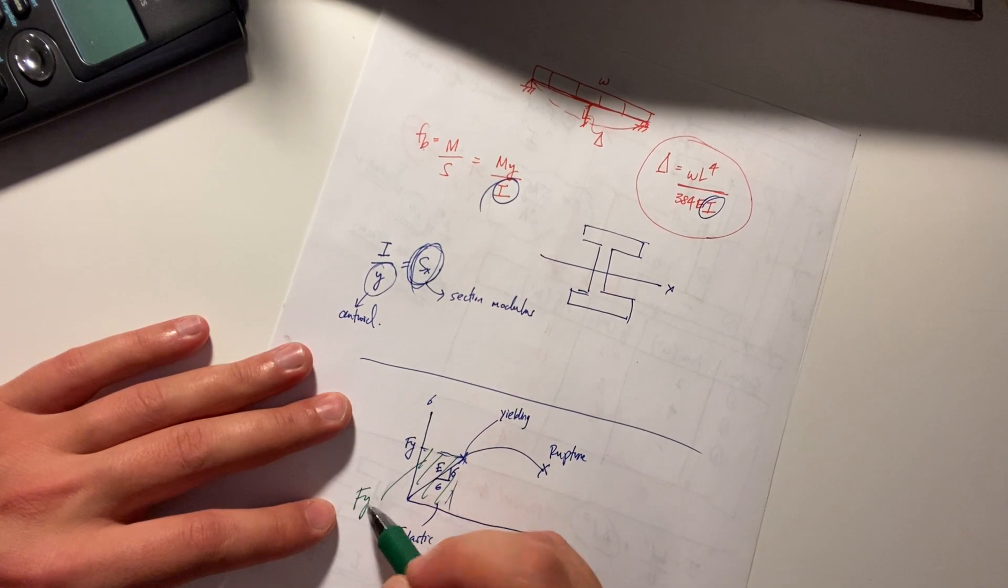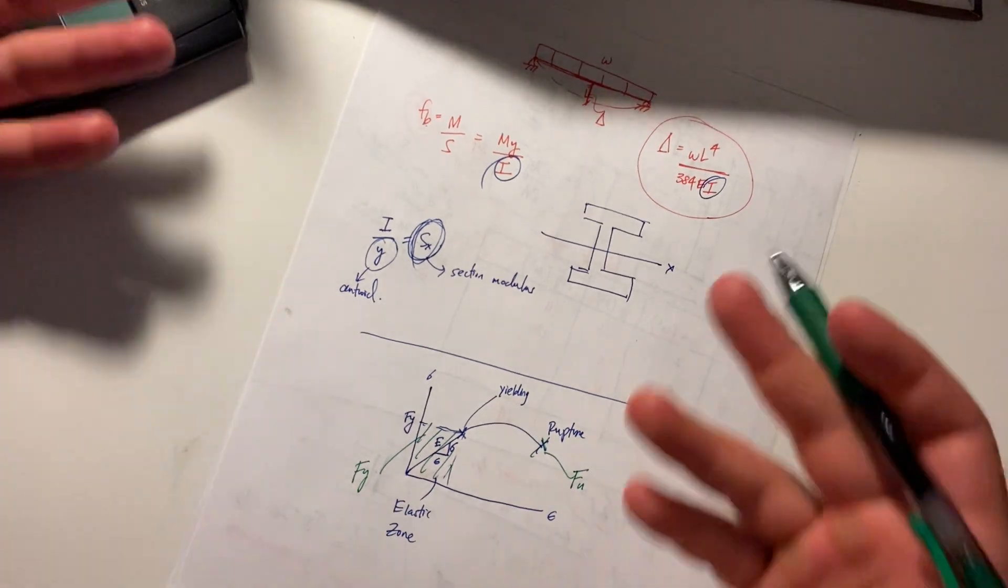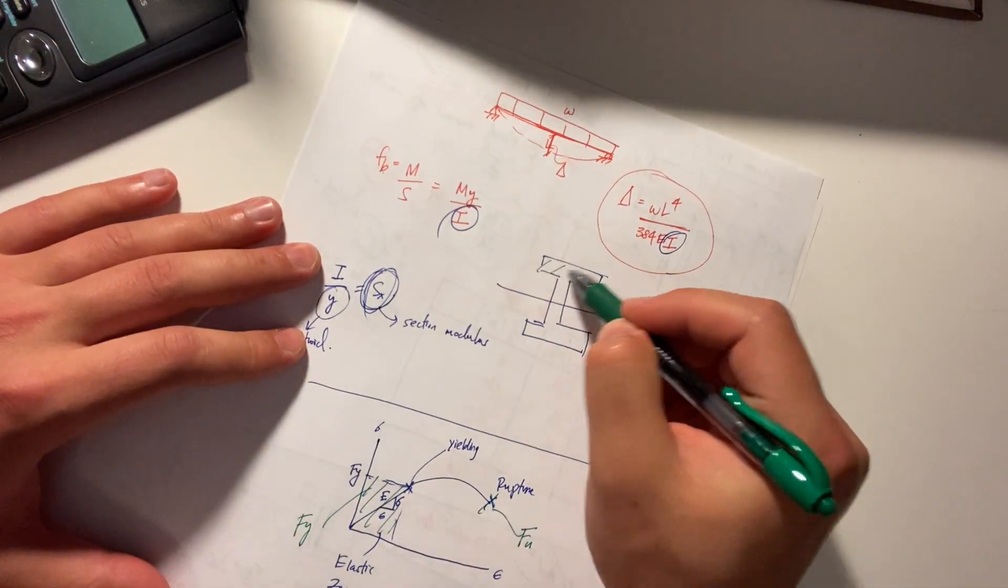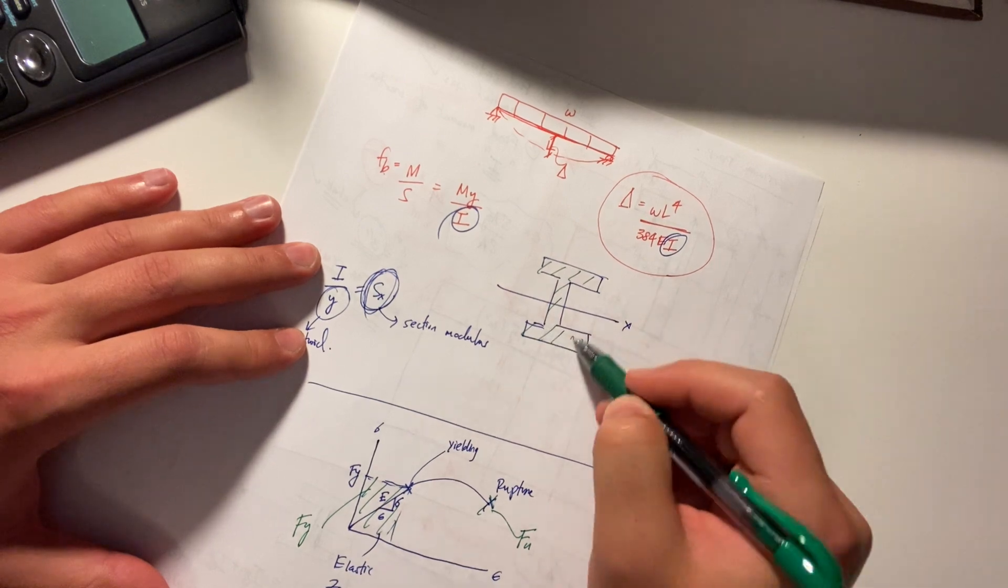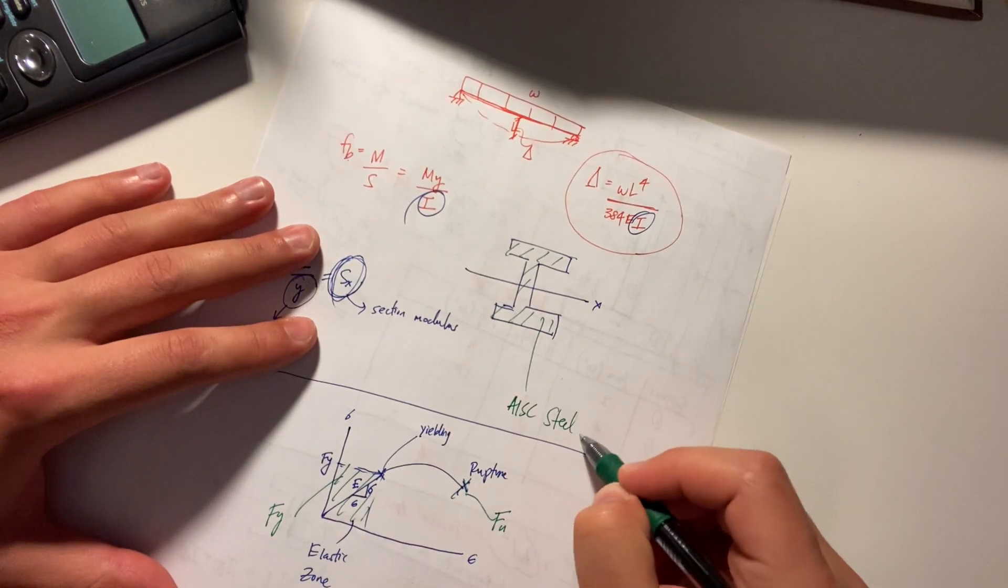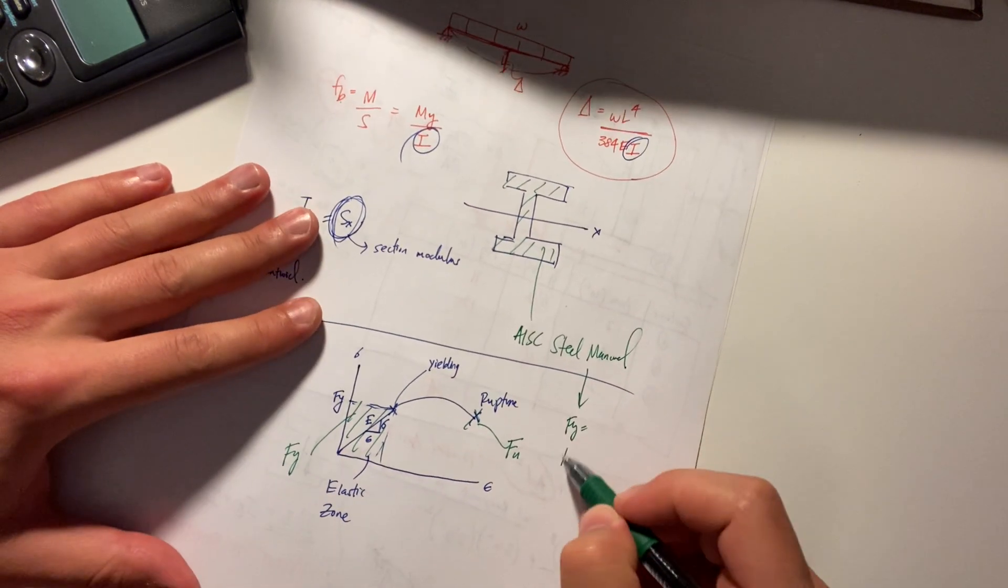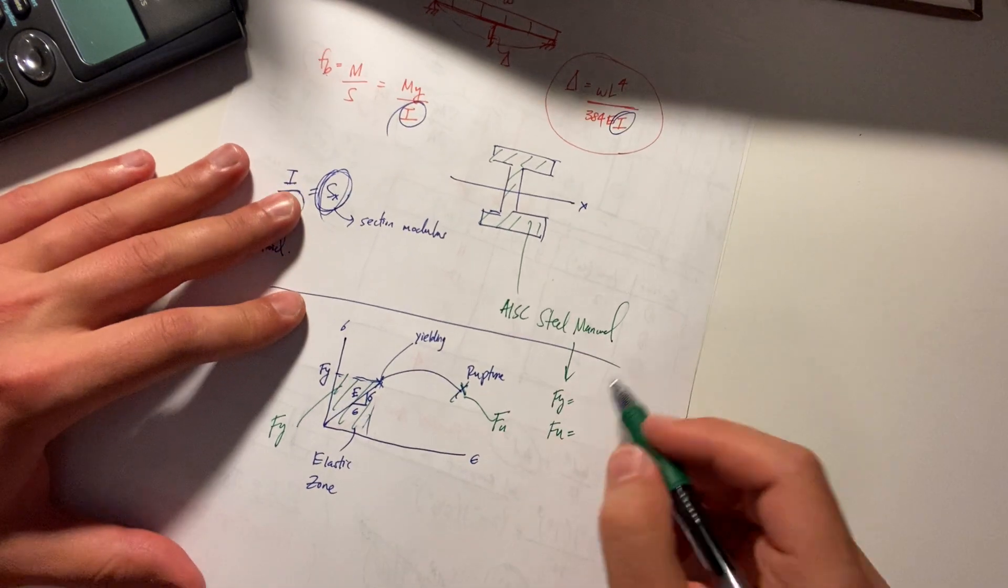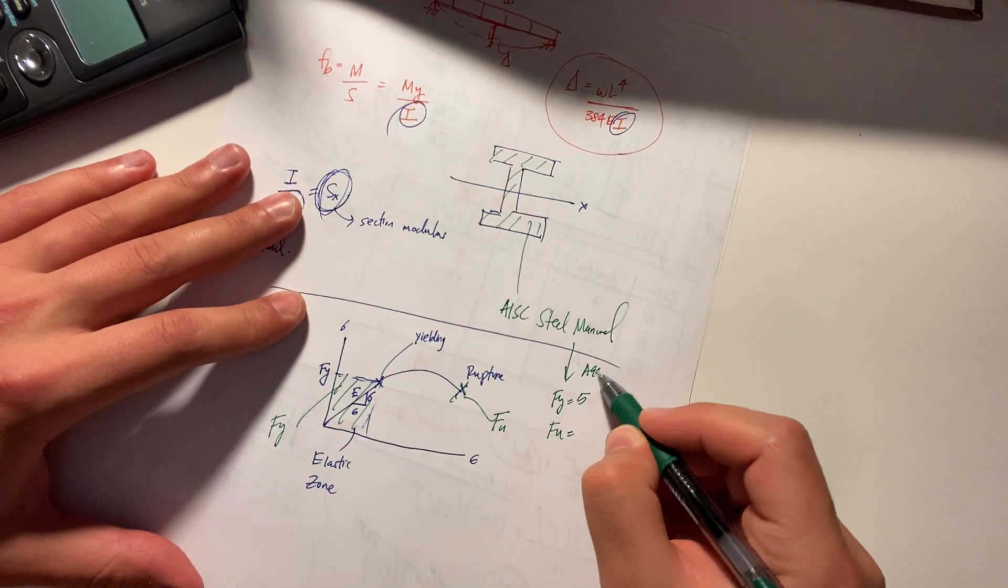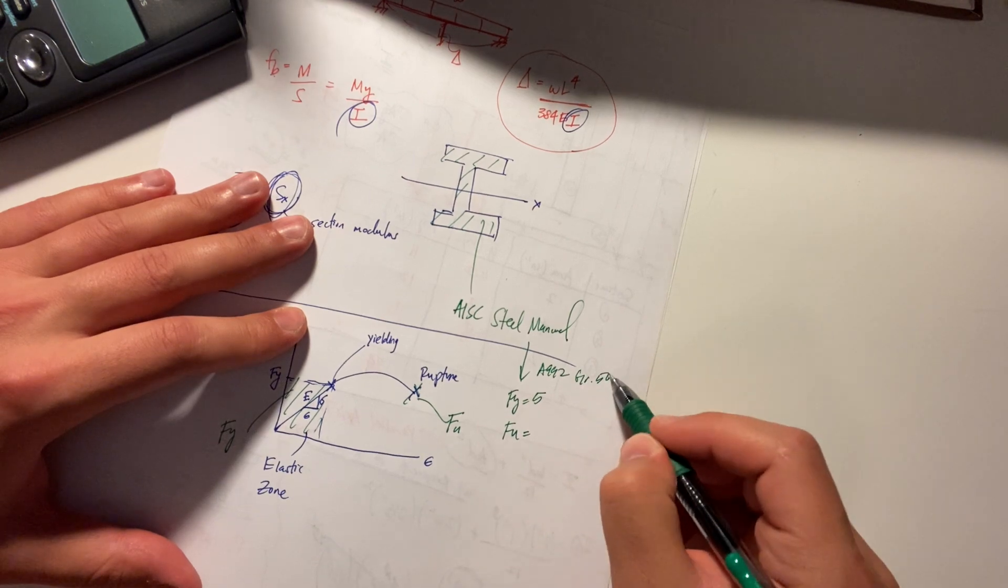In here so you're going to deal a lot with fy over here you're dealing with fu hence again these shapes go look in the aisc steel manual there are associated fys and fu's typically for an a992 grade 50 steel used a lot pretty common you got 50 ksi 65 ksi